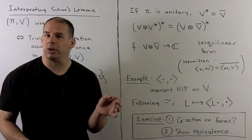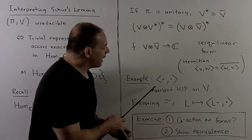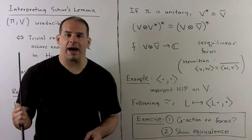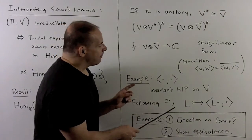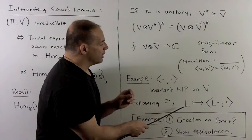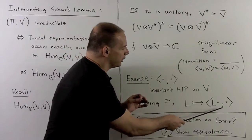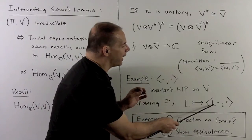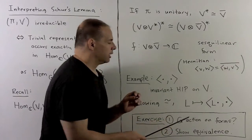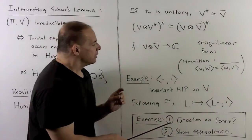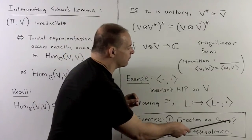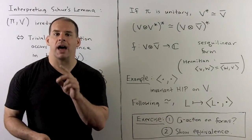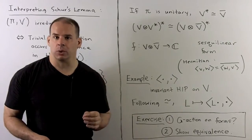An example of a sesquilinear form: if I have a unitary representation, I could take the invariant Hermitian inner product on V. Following out all of these correspondences, I'll have a map that carries each linear transformation — each element from Hom(V, V) — to the space of sesquilinear forms, by taking a linear transformation L and putting it in the first spot of our invariant Hermitian inner product. Exercise: first, figure out the G-action on the space of sesquilinear forms; then show that this map is an equivalence of representations — that Hom(V, V) is equivalent to the space of sesquilinear forms.